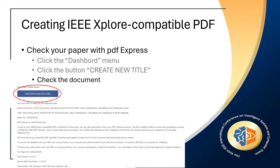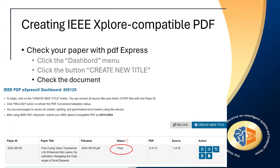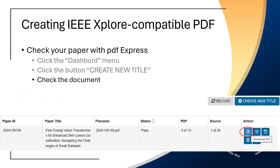The converted paper is sent by email and also available on your PDF Express dashboard. You can download your PDF paper and check it. The status of your paper is shown as passed, which means that the conversion has been made successfully. If not, the status will be failed. You can also view and download your PDF paper from your PDF Express dashboard.